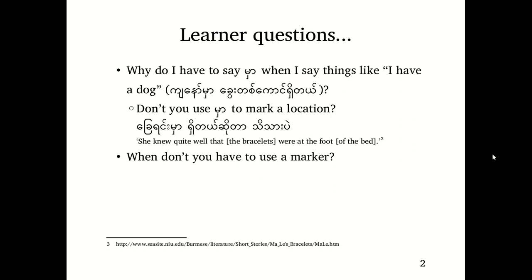So questions that learners may have — for example, when I say things like 'I have a dog', why do I have to say 'ma'? Don't you just use 'ma' to mark a location? For example, 'she knew quite well that the bracelets were at the foot of the bed' — that's a definite location. We know that 'ma' marks a location, but why do I have to say 'ma'? Why can't you say 'ga'? Because people think 'ga' is usually the subject marker. And when talking with people on the street we usually don't hear 'ma' a lot — so when don't you have to use a marker? Those are two short questions I want to answer today.